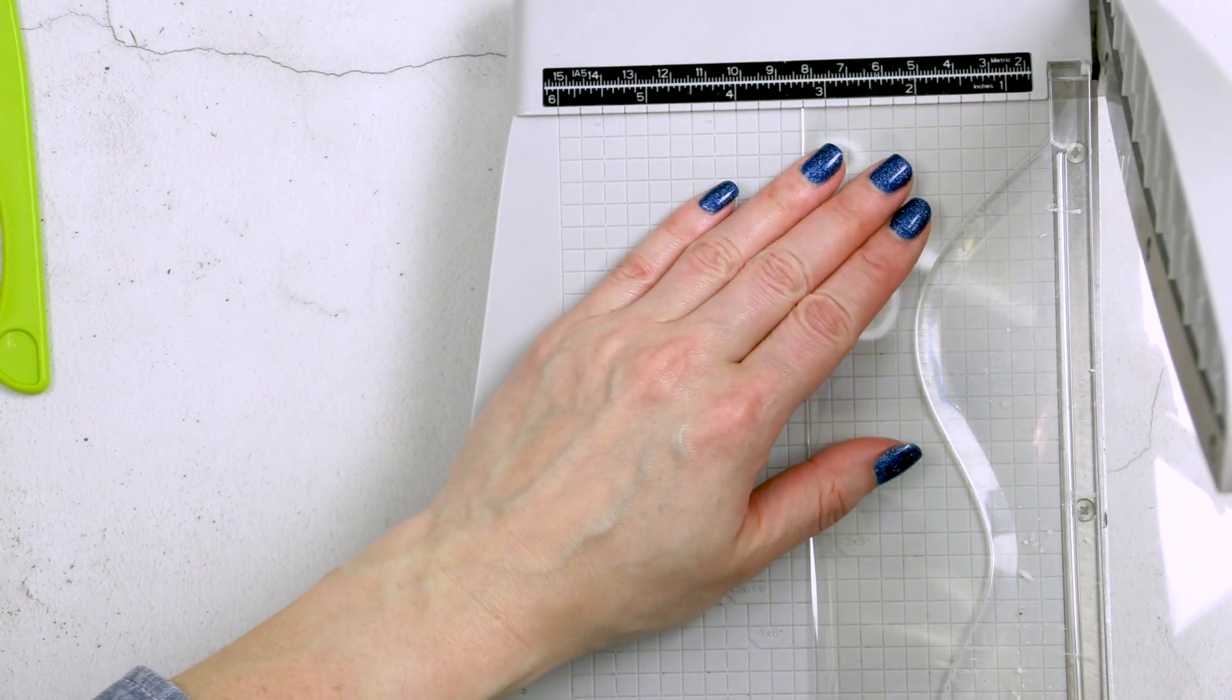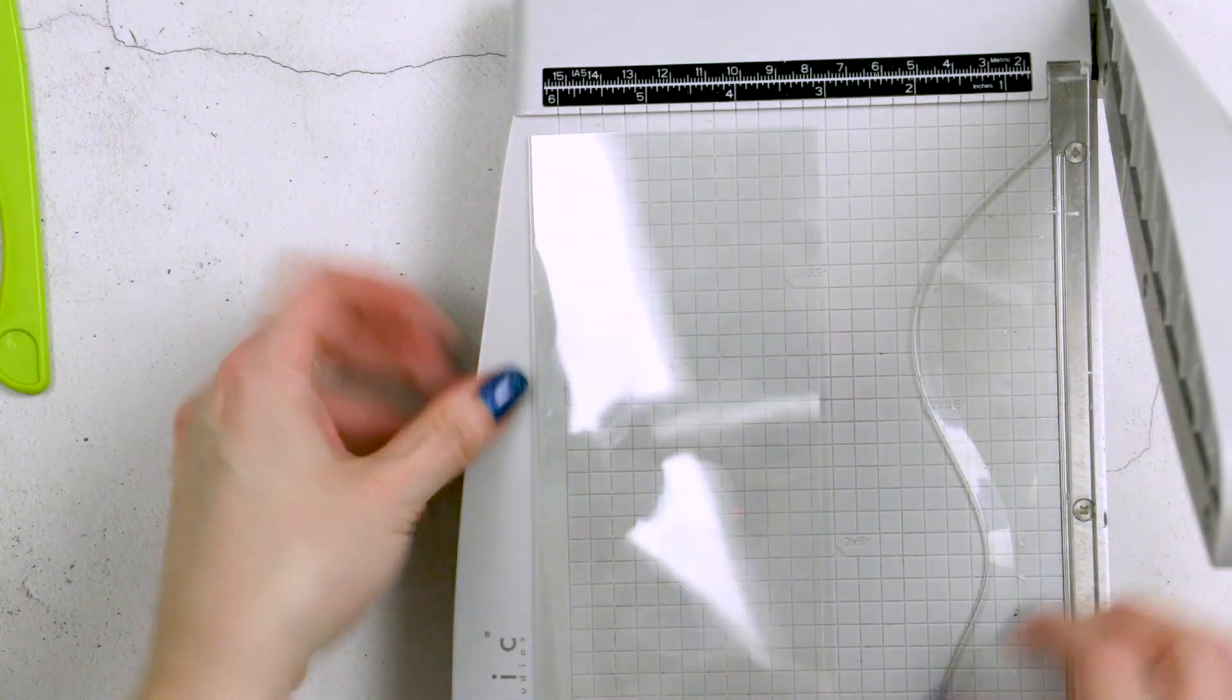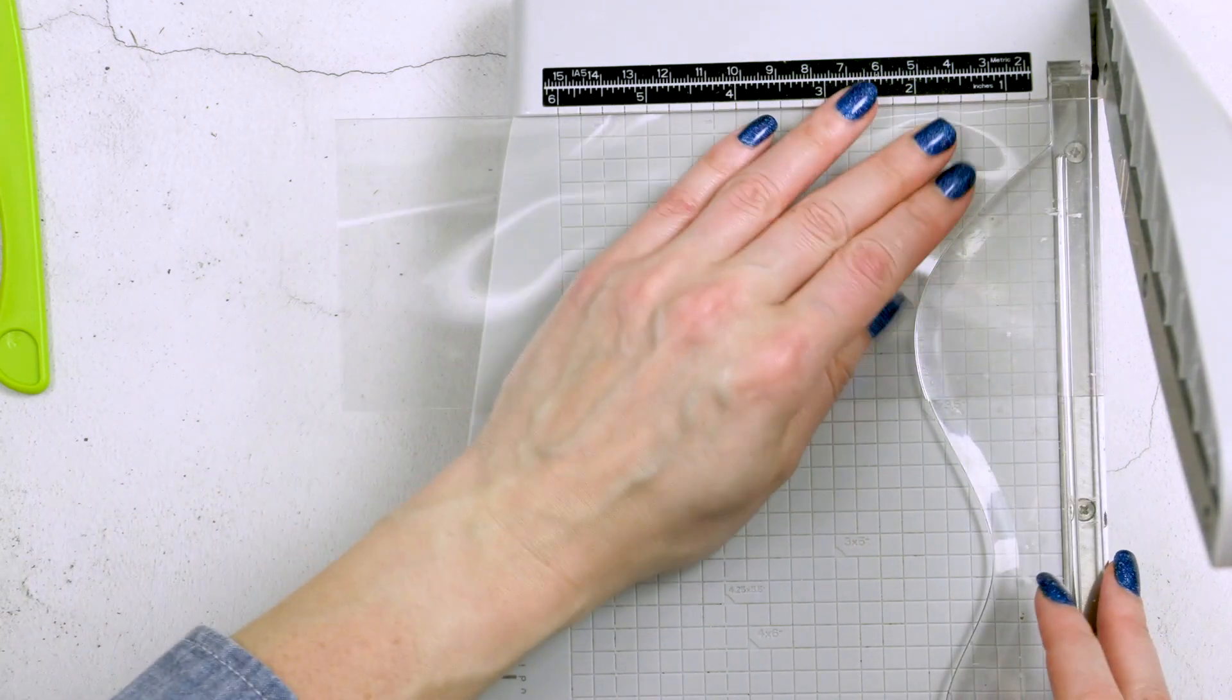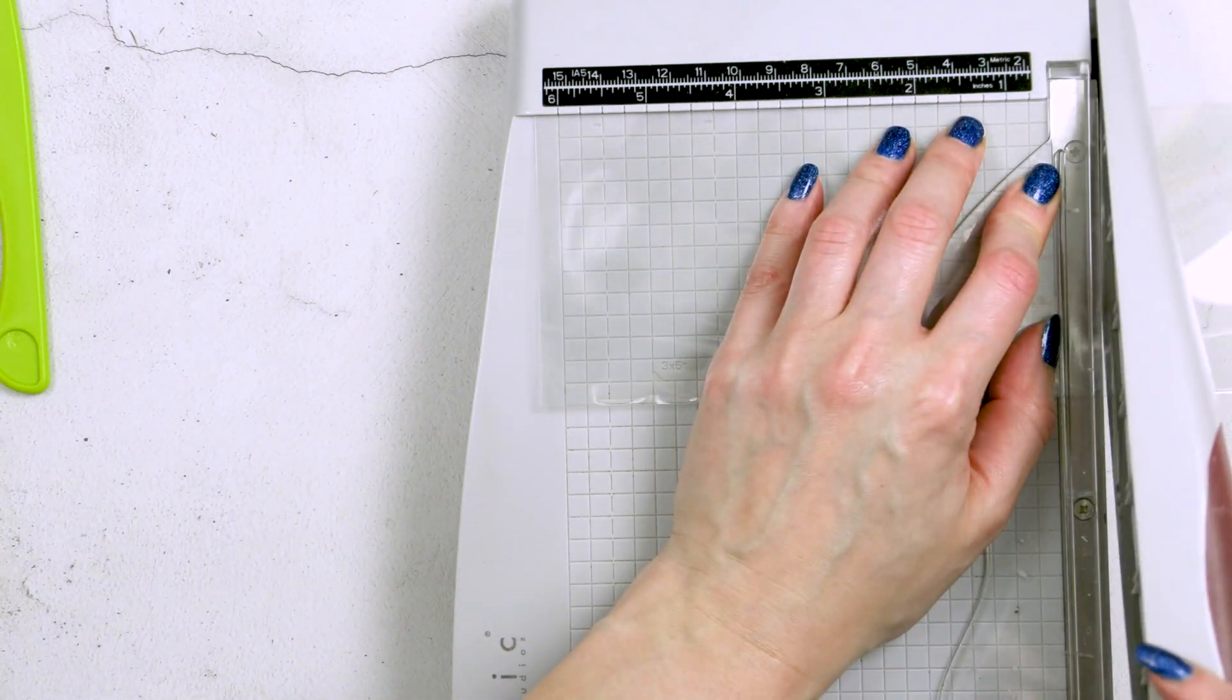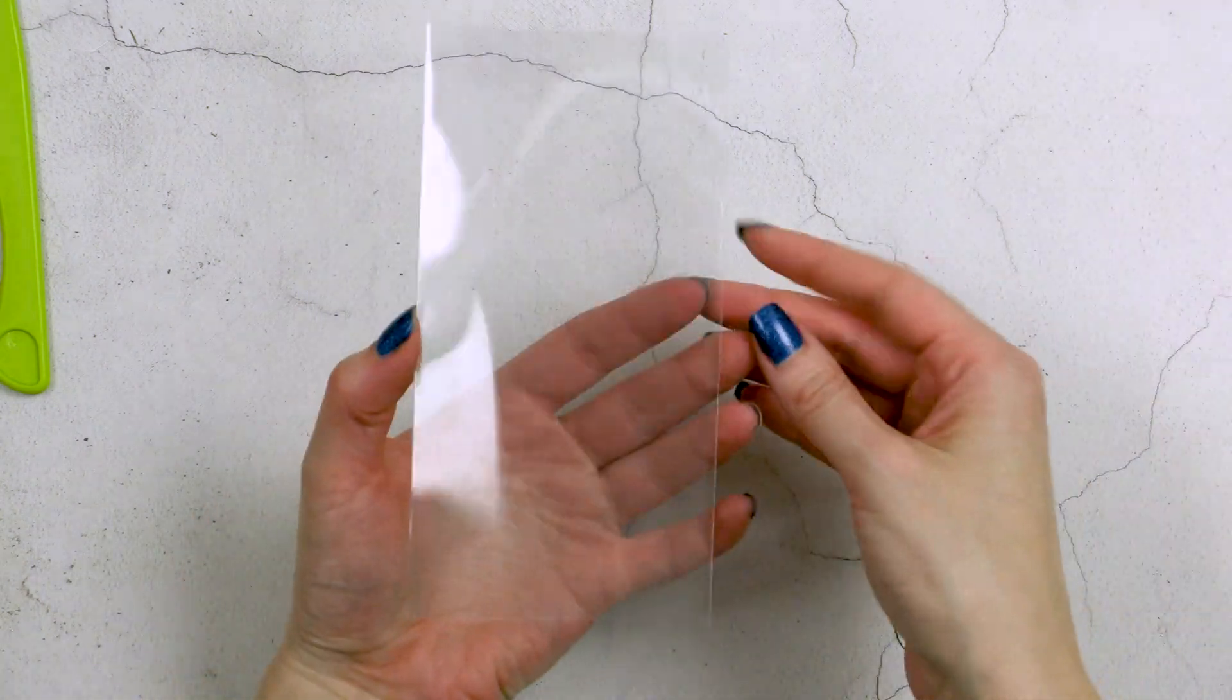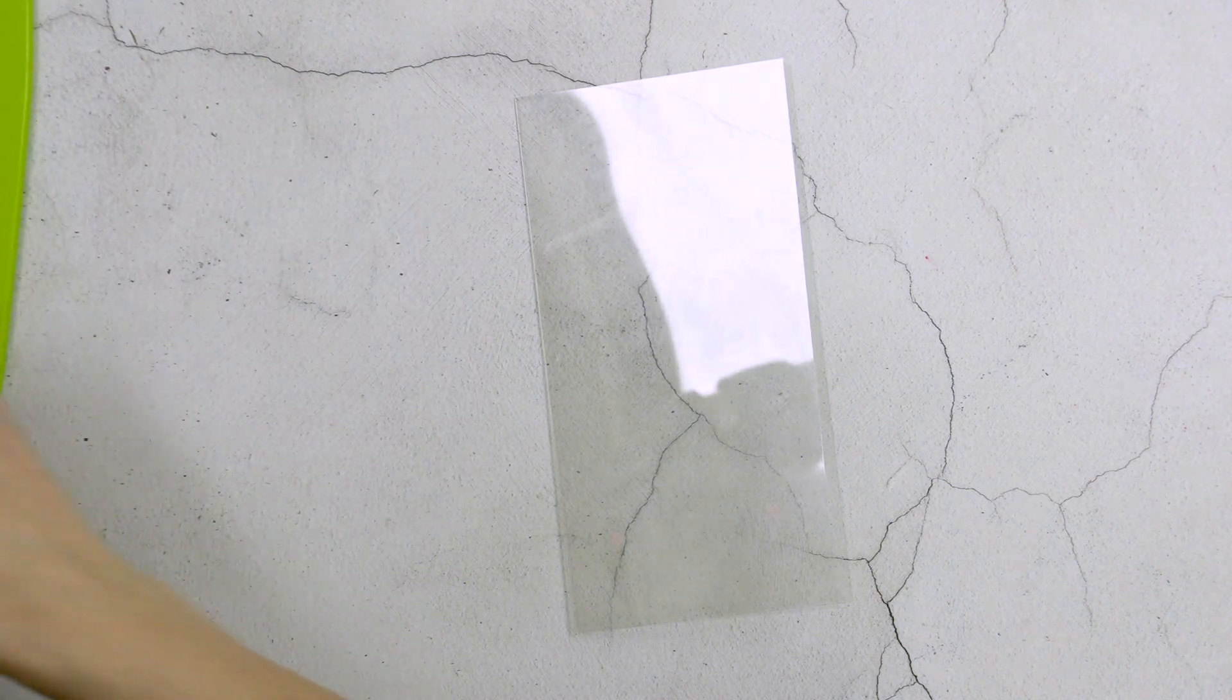I started to work on my clear card by creating a card base from a sheet of heat resistant acetate. I'm making a mini slimline card so the card size I need to make is 3 1/4 by 6 1/4 inches. I used my scoring tool and my scoring board to score a sheet of acetate at 3 1/4 inches. I folded it, creased the score line and next used my paper trimmer to trim the card base to size. I'm quite into the mini slimline trend these days, hence why I picked this particular card size for my projects today.